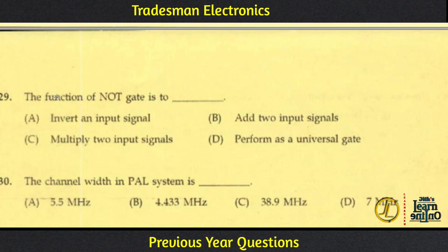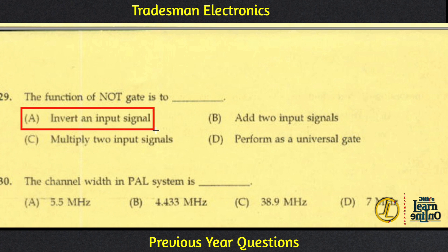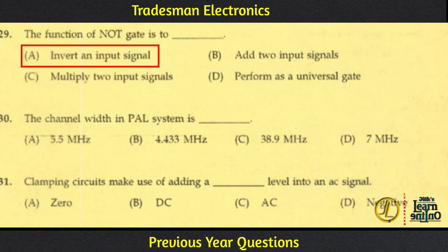The function of the NOT gate is to invert the input signal. The NOT gate inverts input signal A to produce the output.